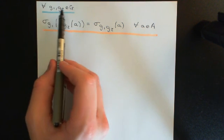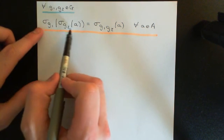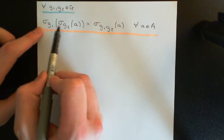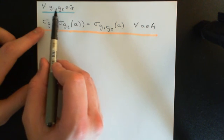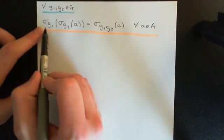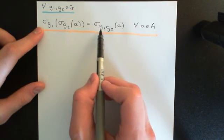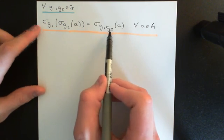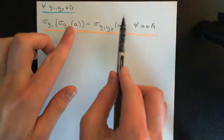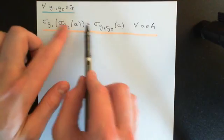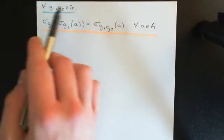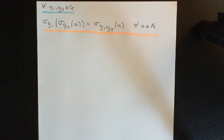In symbols: taking σ_g1 of σ_g2 of a — the composition of the two set permutations associated with g1 and g2 — must equal σ_(g1∘g2) of a, where g1∘g2 is composition in the group G. This equation needs to hold for all a in A and all g1, g2 in G.